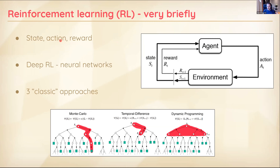With reinforcement learning chosen as our approach, let's briefly revisit the key terms. The state is the game or board state. The action is what the agent can do. The reward is the central part of RL — it's what you want to maximize. You reward the agent for taking the right actions, and the goal is to maximize the cumulative reward obtained.